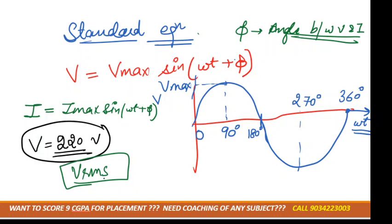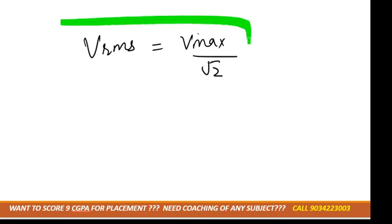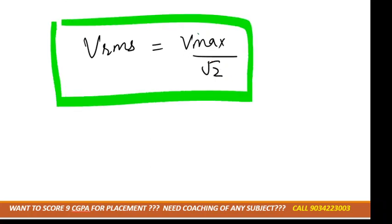For every calculation we always use RMS voltage, not maximum voltage. The maximum voltage is just the one-time peak. If asked how much voltage comes to your house, you say the normal common voltage, not the peak. The relationship between RMS and maximum is: v-rms equals v-max divided by root 2. Similarly, i-rms equals i-max divided by root 2.